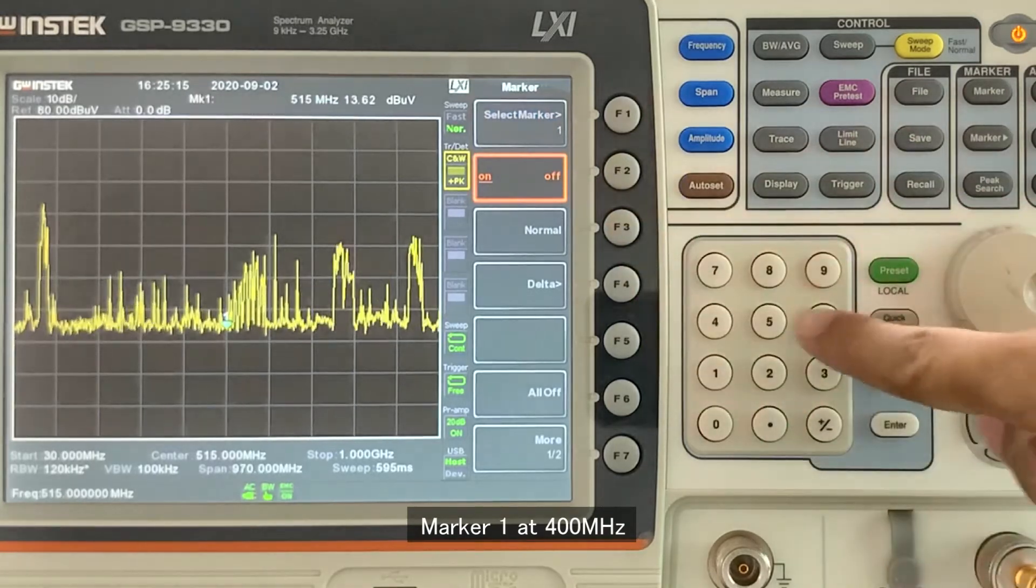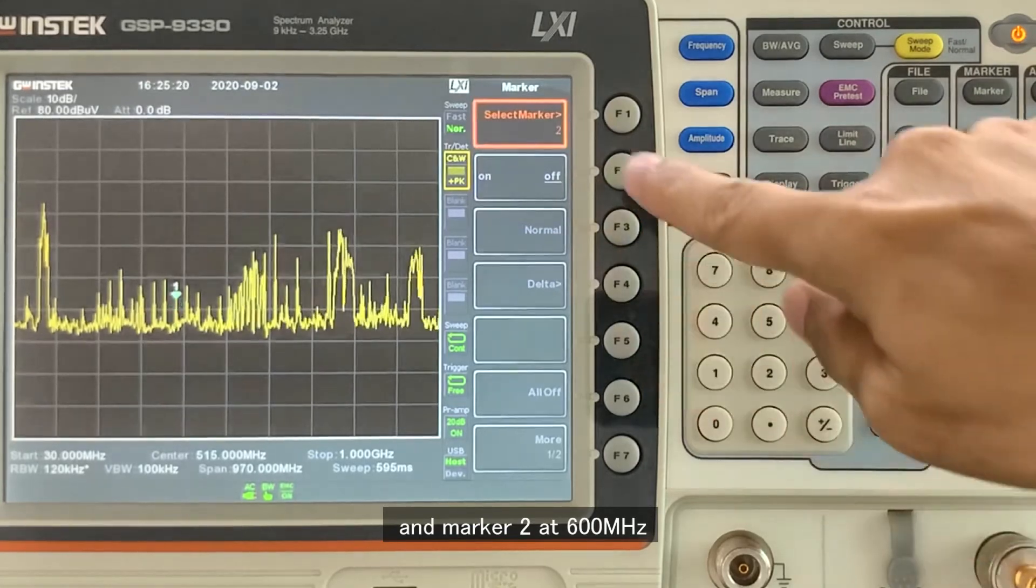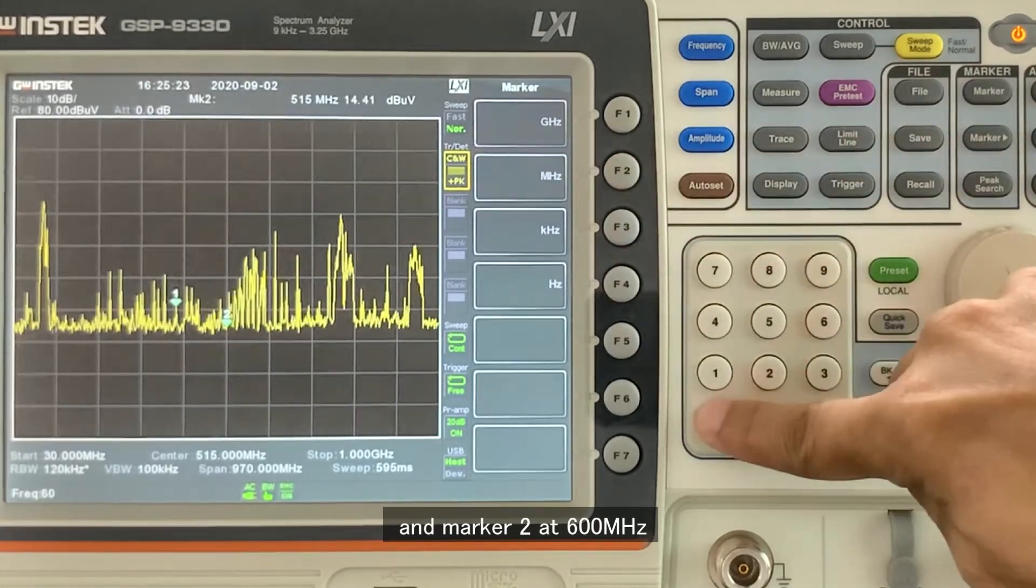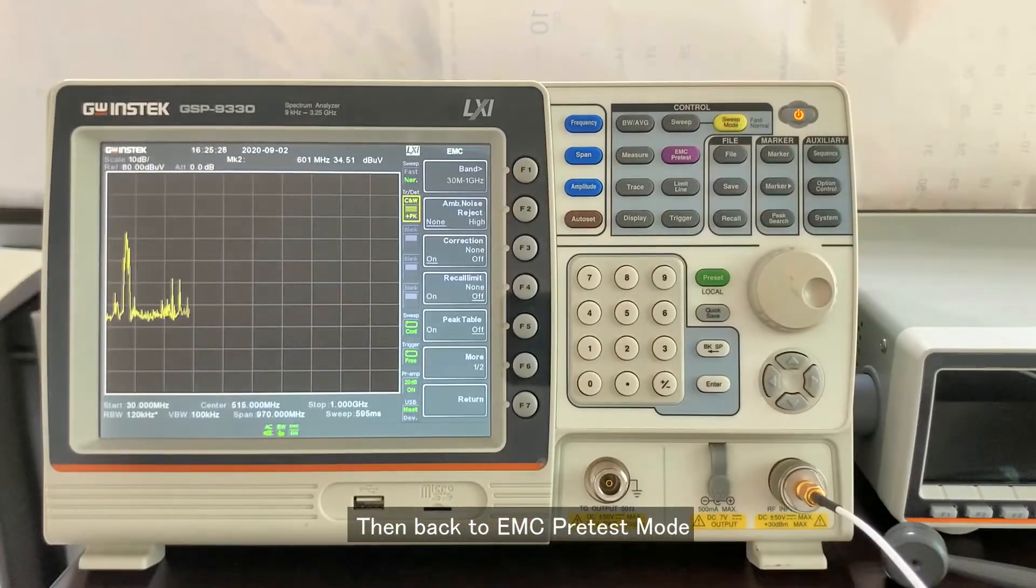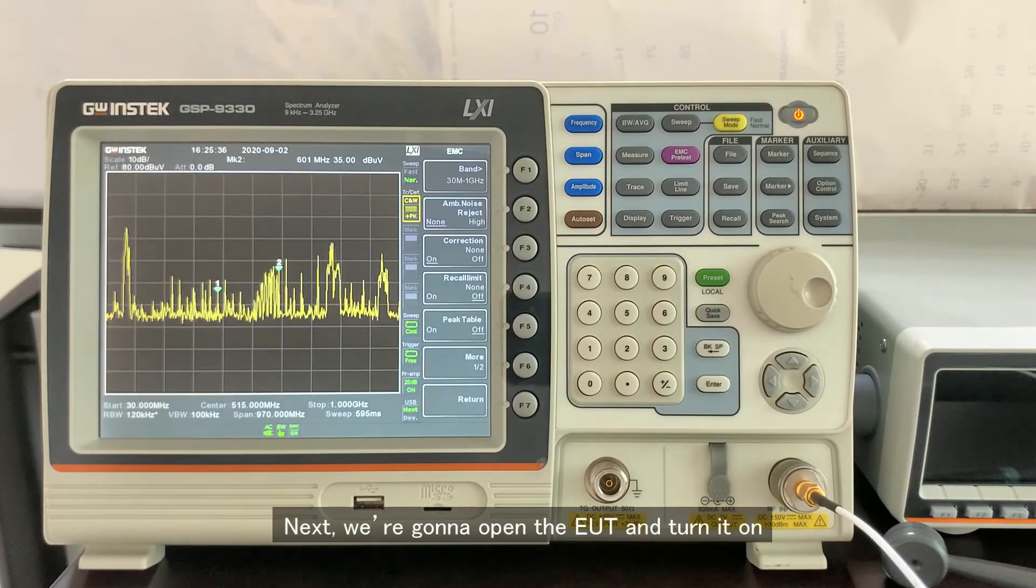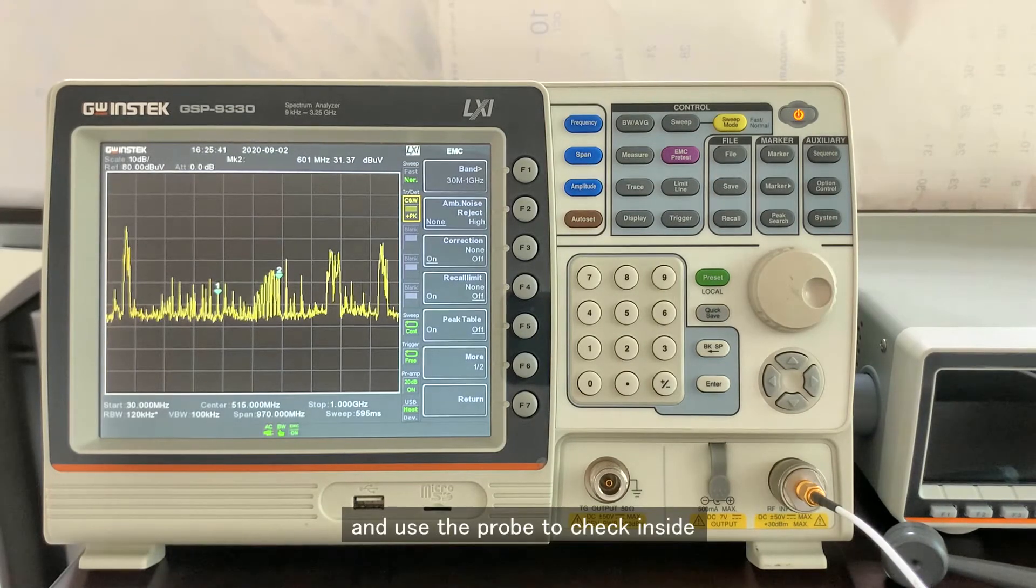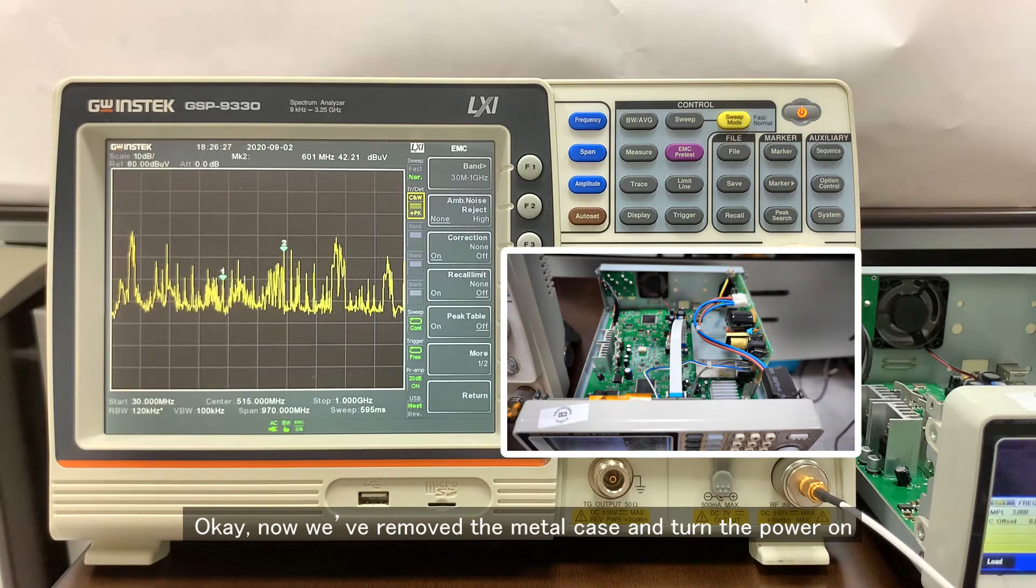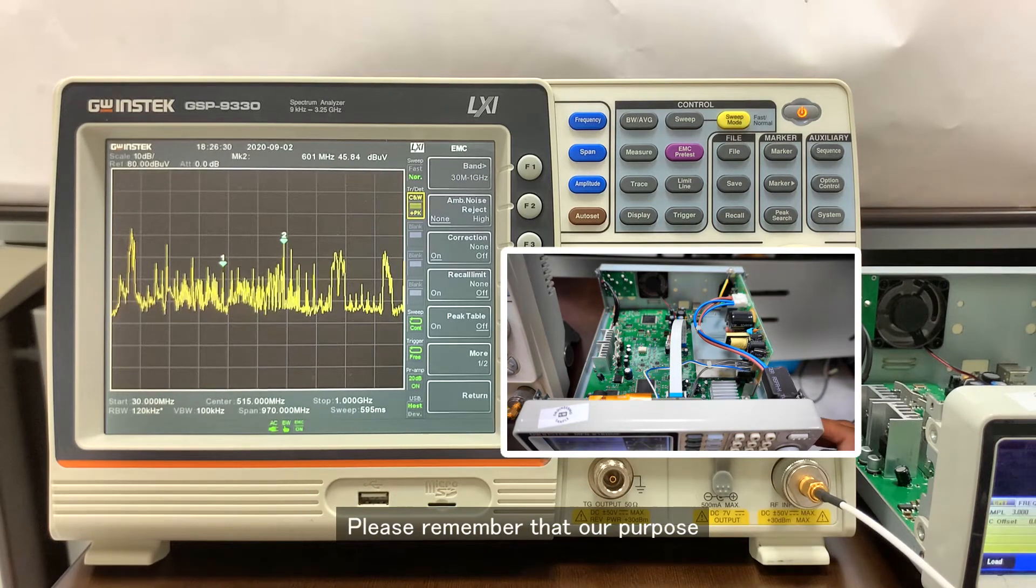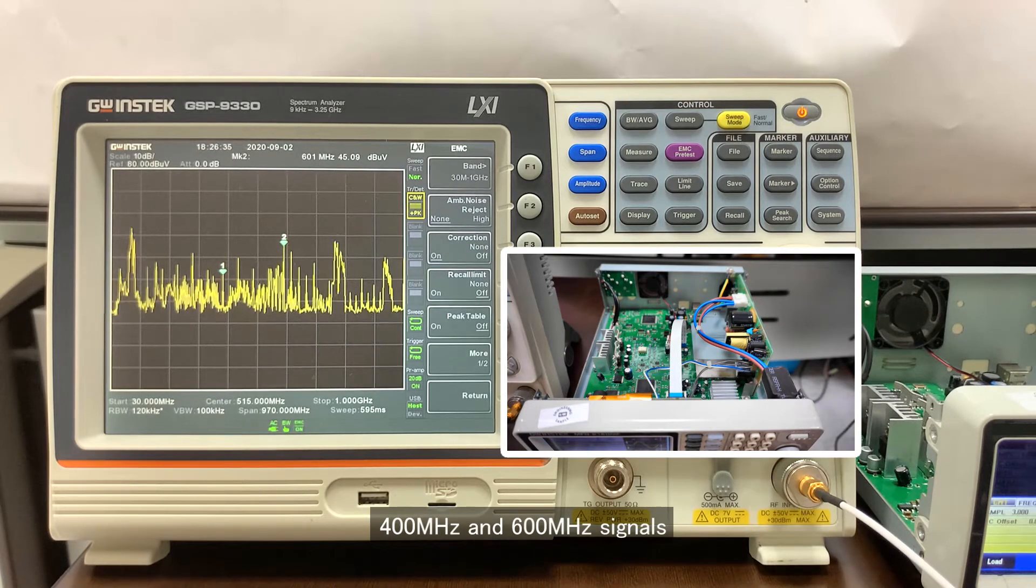Marker 1 at 400MHz and marker 2 at 600MHz. Then back to EMC pre-test mode. Next, we're gonna open the EUT and turn it on and use the probe to check inside. Now we have to remove the metal case and turn the power on. Please remember that our purpose is to find out where gets the strongest 400MHz and 600MHz signals.